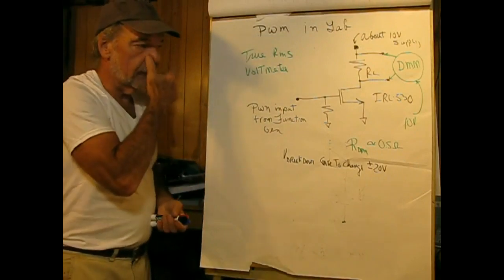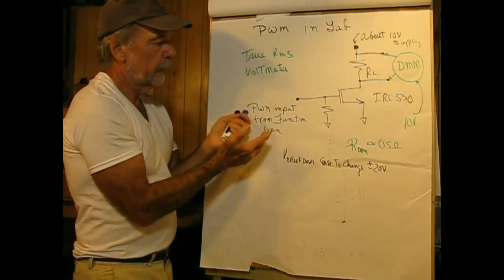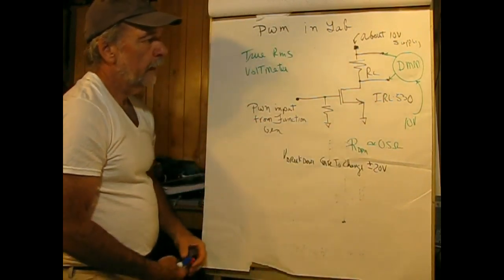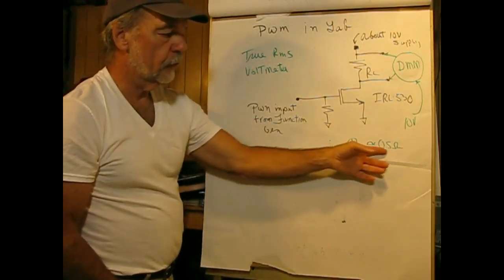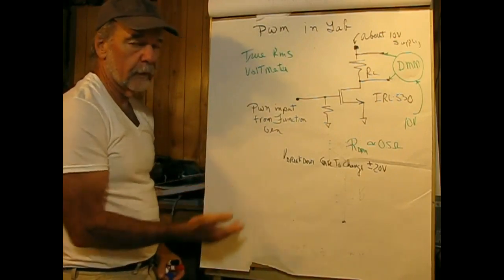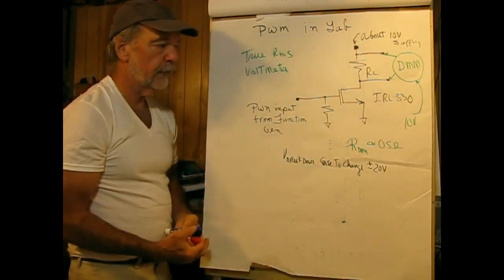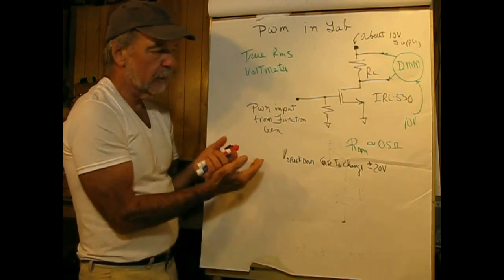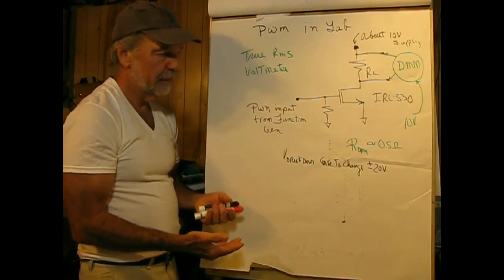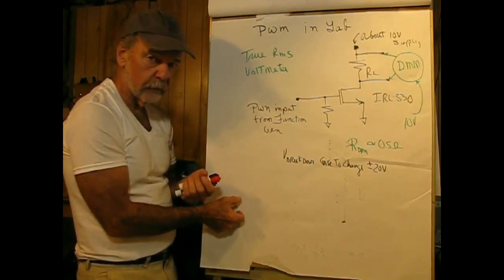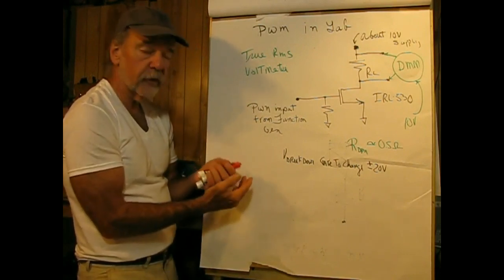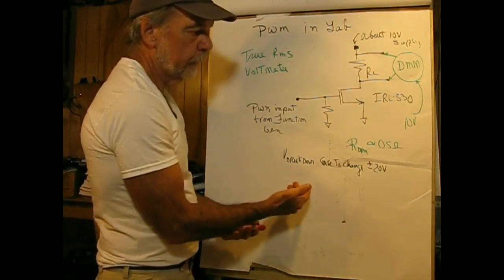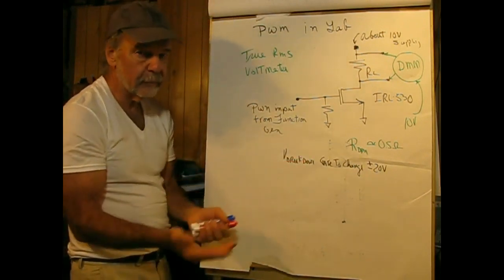Finally, pulse width modulation in the lab. This is the circuit we're going to be using, which uses a relatively old IRL530 device with an RDS_on of about 0.5 ohms. The reason I want to keep this older device is that if I upgraded to a contemporary FET, the RDS_on would be so low it would be easy to forget about it. But RDS_on in a contemporary device is very important because power dissipation is a function of the drain current squared times RDS_on.